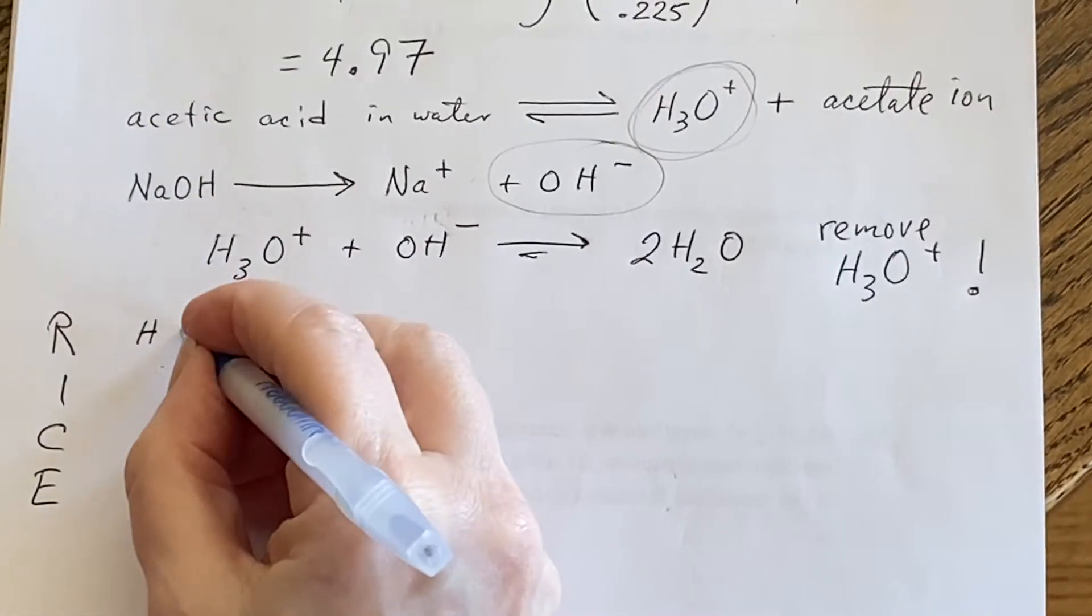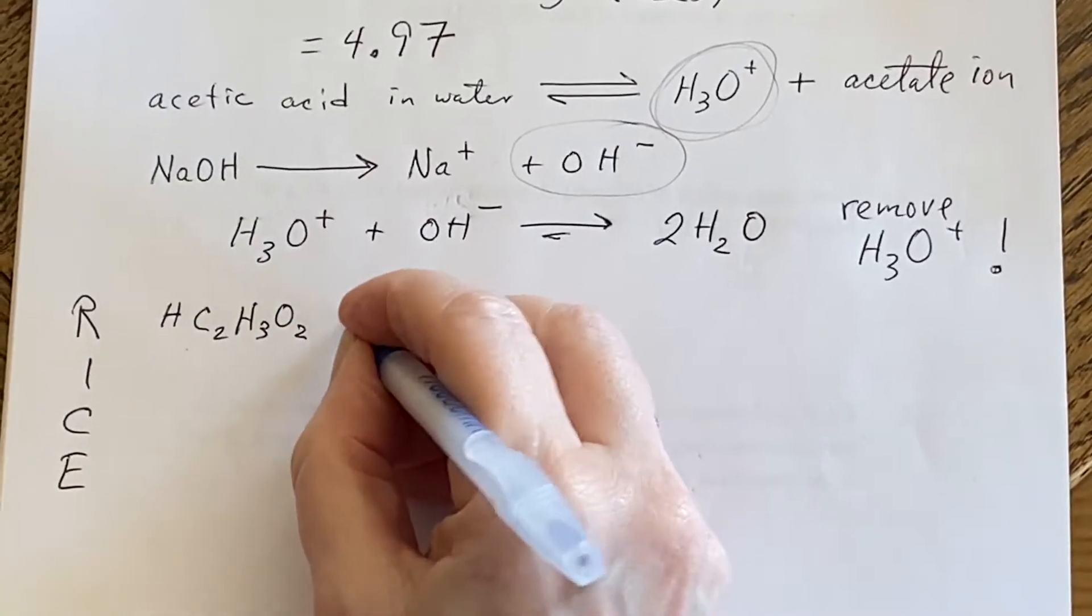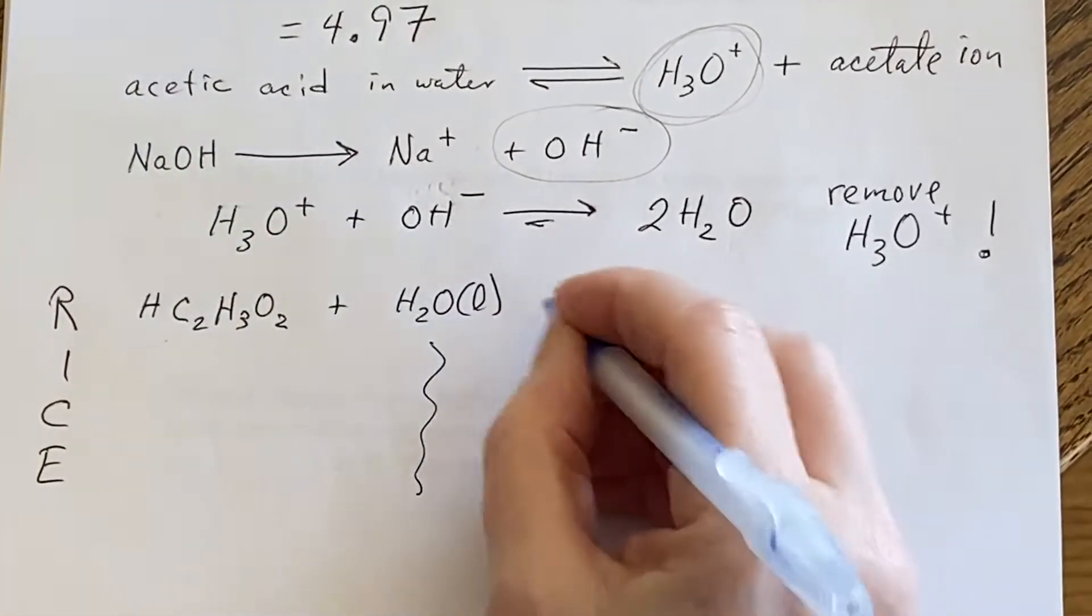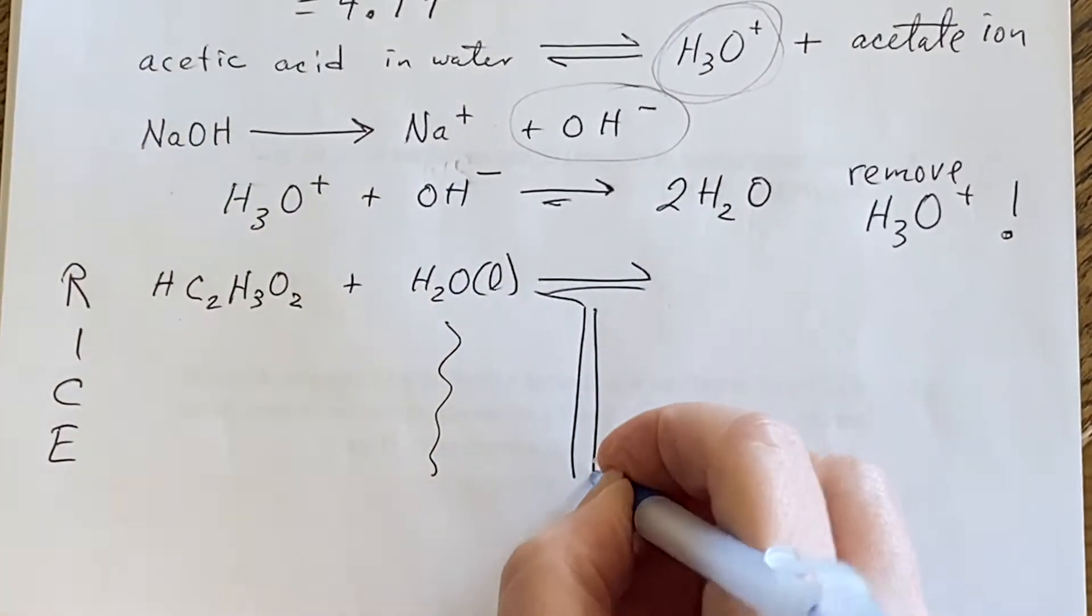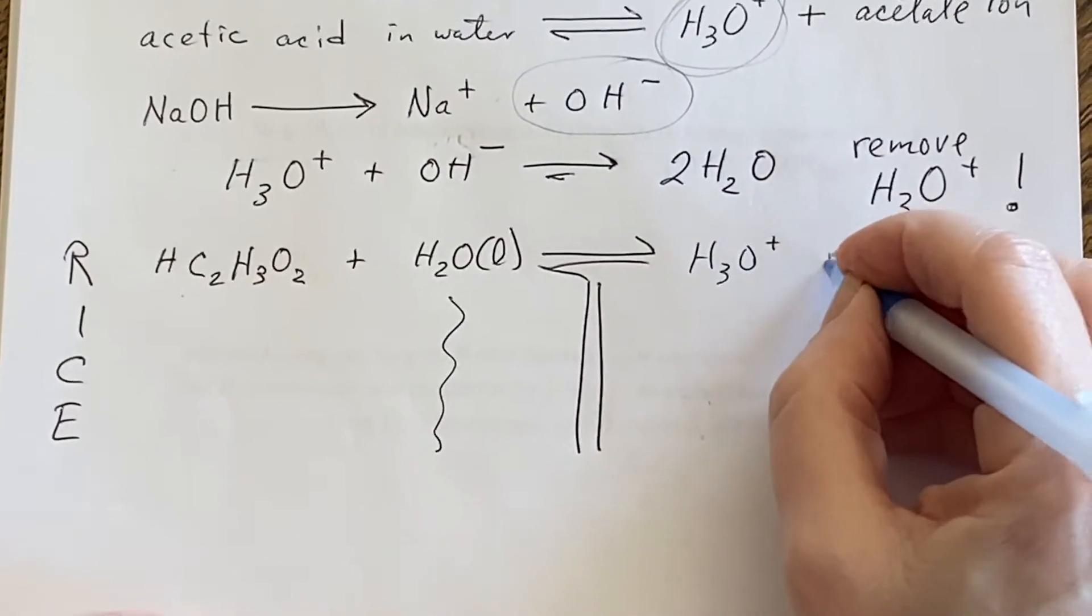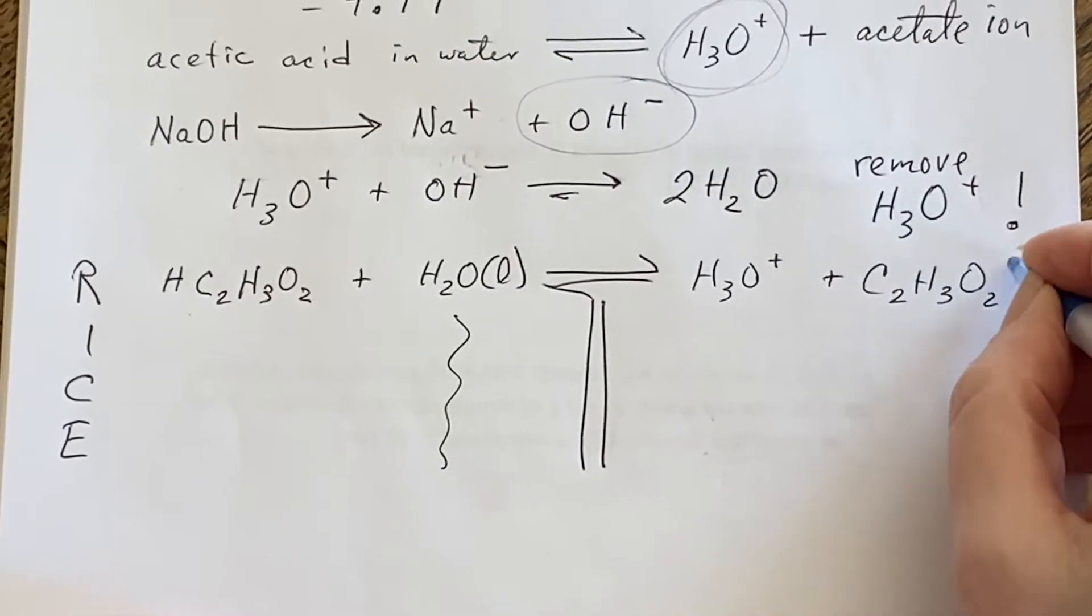So here is my acetic acid and my water in an equilibrium. So over on the other side, then we have hydronium ions and the acetate ion.